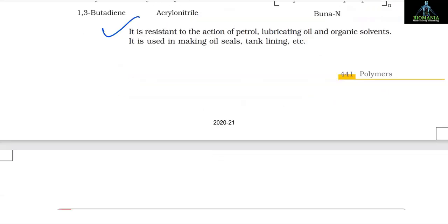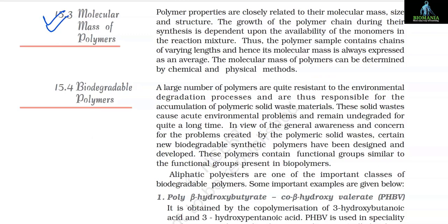15.3 Molecular Mass of Polymers: Polymer properties are closely related to their molecular mass, size and structure. The growth of the polymer chain during synthesis is dependent upon the availability of monomers in the reaction mixture. Thus, the polymer sample contains chains of varying lengths and hence its molecular mass is always expressed as an average. The molecular mass of polymers can be determined by chemical and physical methods.